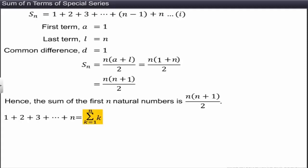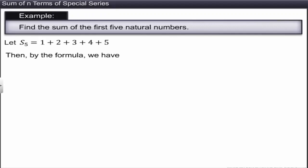Example: The sum of the first 5 natural numbers is S₅ = 5×(5+1)/2 = 15. Let us now find the sum of the squares of the first N natural numbers. Using the identity k³ − (k−1)³ = 3k² − 3k + 1, and substituting k = 1, 2, 3, …, N successively, then adding all equations.